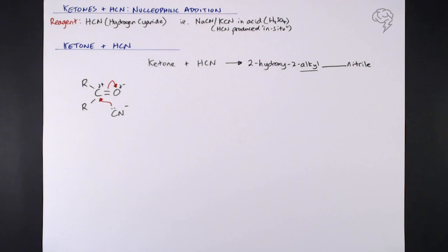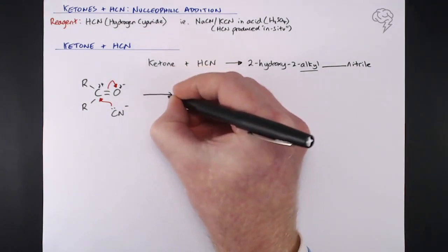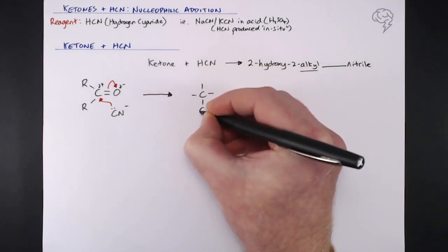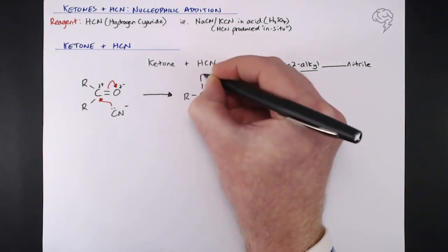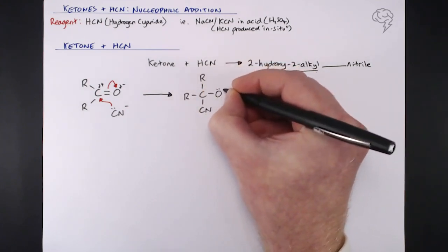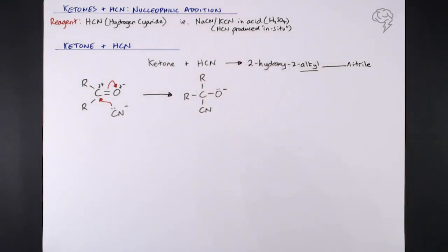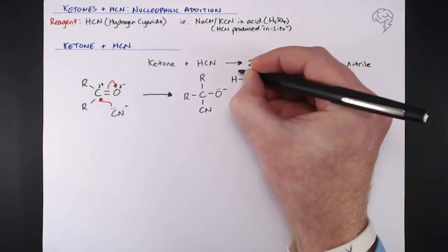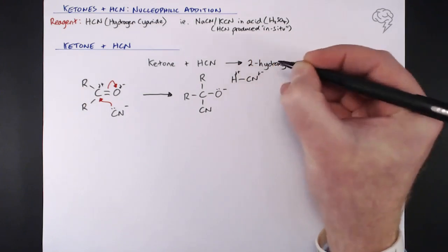In the intermediate we've got a tetrahedral molecule with four single bonds and a fully negative oxygen atom because of the heterolytic fission in the first step. That then reacts with a hydrogen cyanide molecule, with the delta plus hydrogen attacked by that lone pair in the fully negative oxygen.